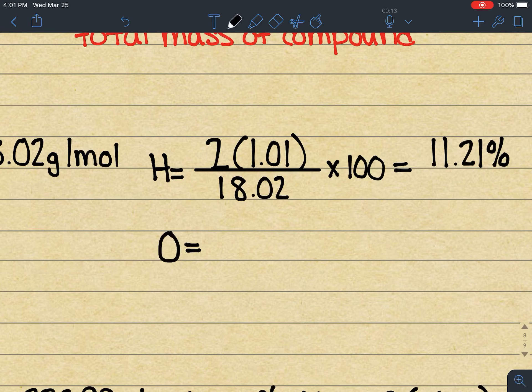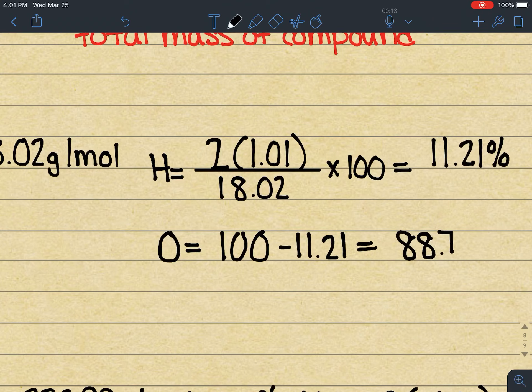One very simple thing is we could take 100, kitty stop, minus 11.21, and that's going to give us a percentage of 88.79%, because the total percentages have to equal 100 every single time we do this.